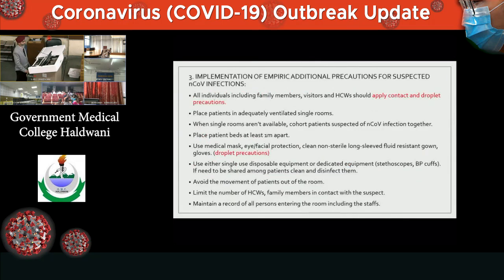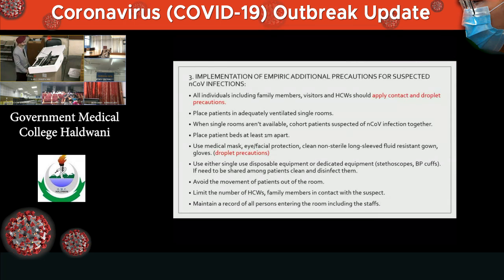For droplet precautions, place patients in adequately ventilated single rooms. There should be 12 air circulations per hour and negative pressure of around 40 PSI, maintained using exhaust fans. Patients' beds should be at least 3 feet or 1 meter apart. Use medical masks, eye and facial protection. Avoid movement of patients out of the room, limit the number of family members and healthcare workers visiting, and maintain a record of all persons entering the room, including staff.